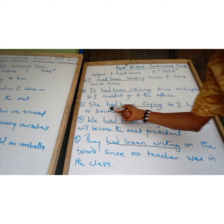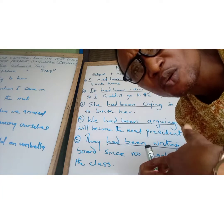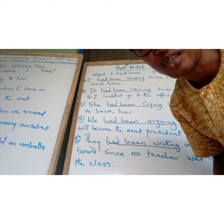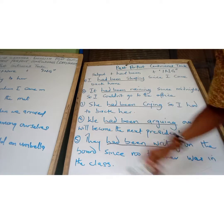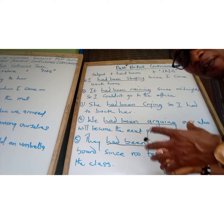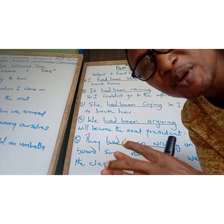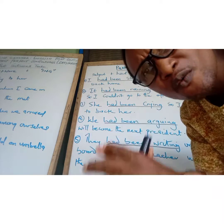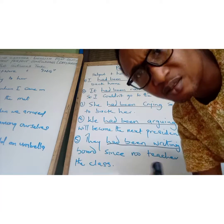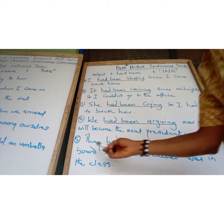Then: 'She had been crying, so I had to rock her.' My baby had been crying, so I had to rock her, and luckily she stopped crying and slept off. Then: 'We had been arguing over who would become the next president.' My friends and I had been arguing since we met each other — arguing over who is going to be the next president of the United States or of Nigeria.